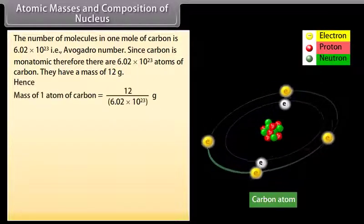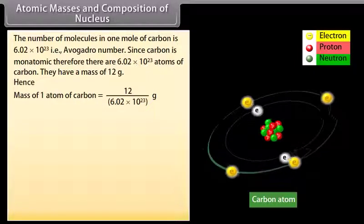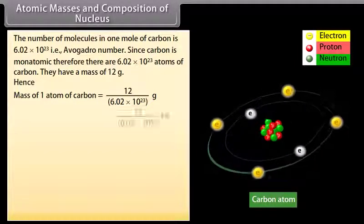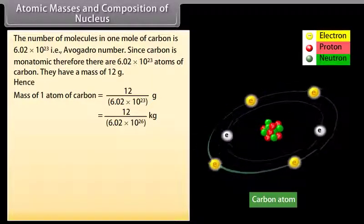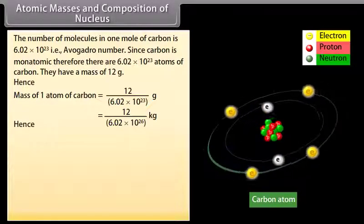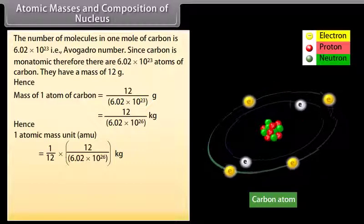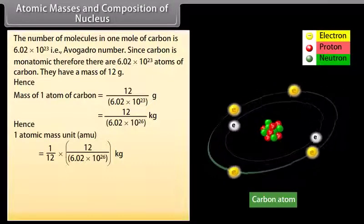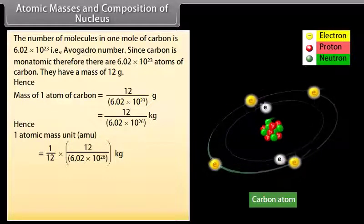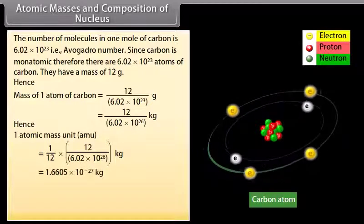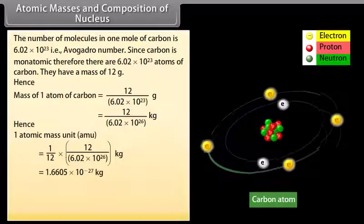Hence, mass of 1 atom of carbon is equal to 12 by 6.02 times 10 to the power 23 gram, which is equal to 12 by 6.02 times 10 to the power 26 kilogram. Hence, 1 atomic mass unit, AMU, is equal to 1 by 12 times 12 by 6.02 times 10 to the power 26 kilogram, which is equal to 1.6605 times 10 to the power minus 27 kilogram.